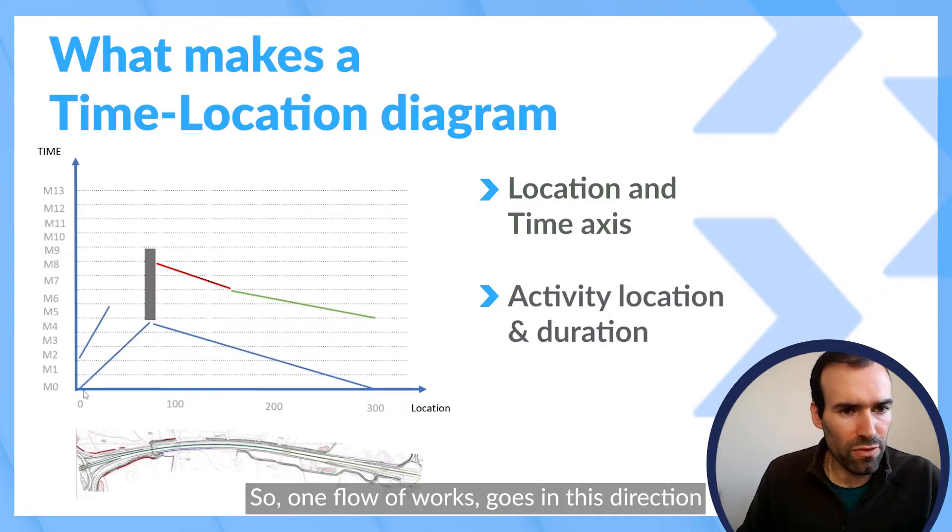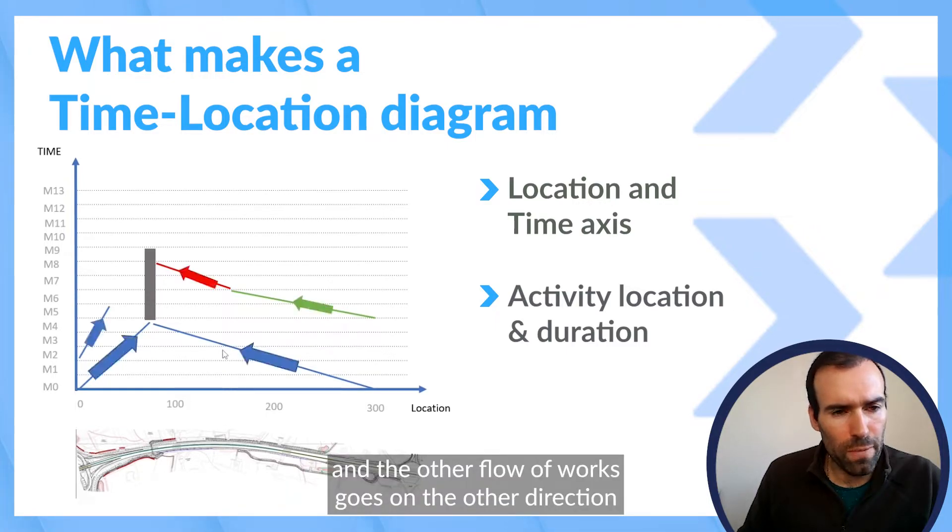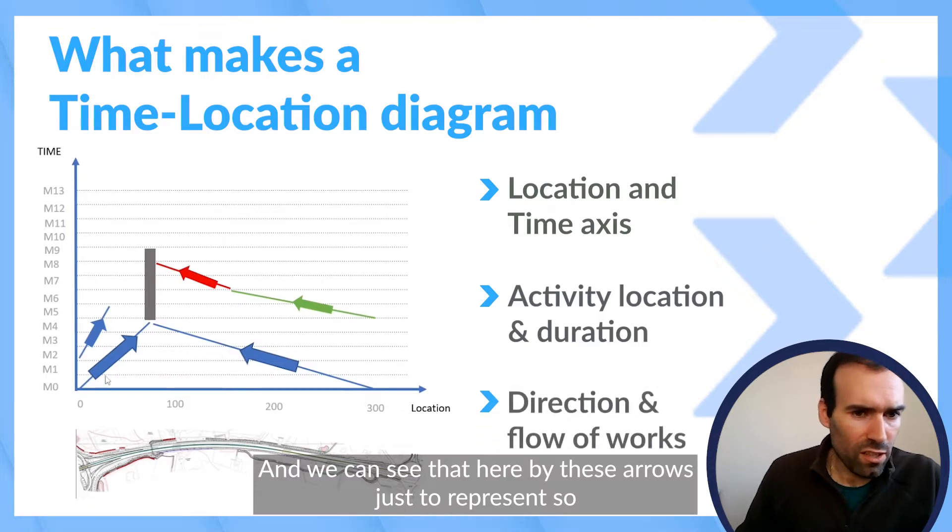zero to month five, so one flow of work goes this direction up and the other flow of work goes the other direction. And we can see that here by these arrows just to represent.